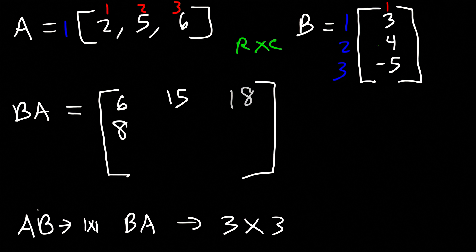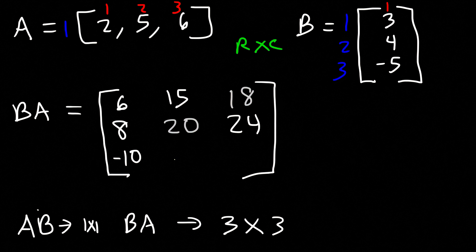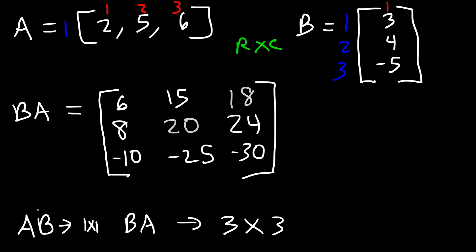Row 2 times column 2: 4 times 5 is 20. Row 2 times column 3: 4 times 6 is 24. Row 3 times column 1: negative 5 times 2 is negative 10. Row 3 times column 2: negative 5 times 5 is negative 25. Row 3 times column 3: negative 5 times 6 is negative 30. So AB and BA are clearly different, and BA has three rows and three columns — a 3 by 3 matrix.